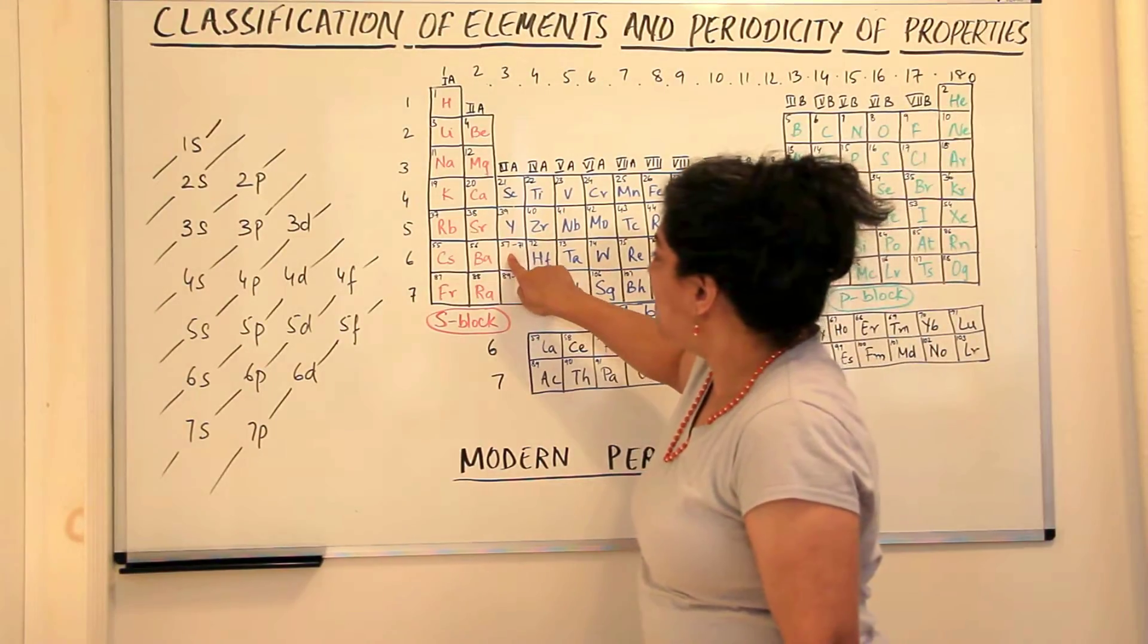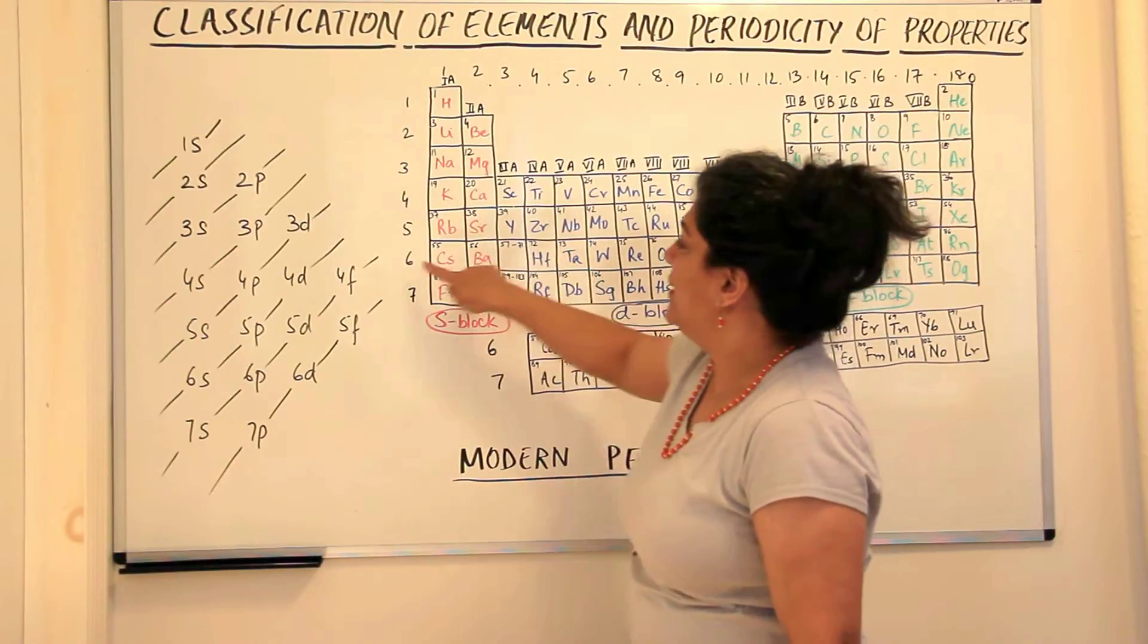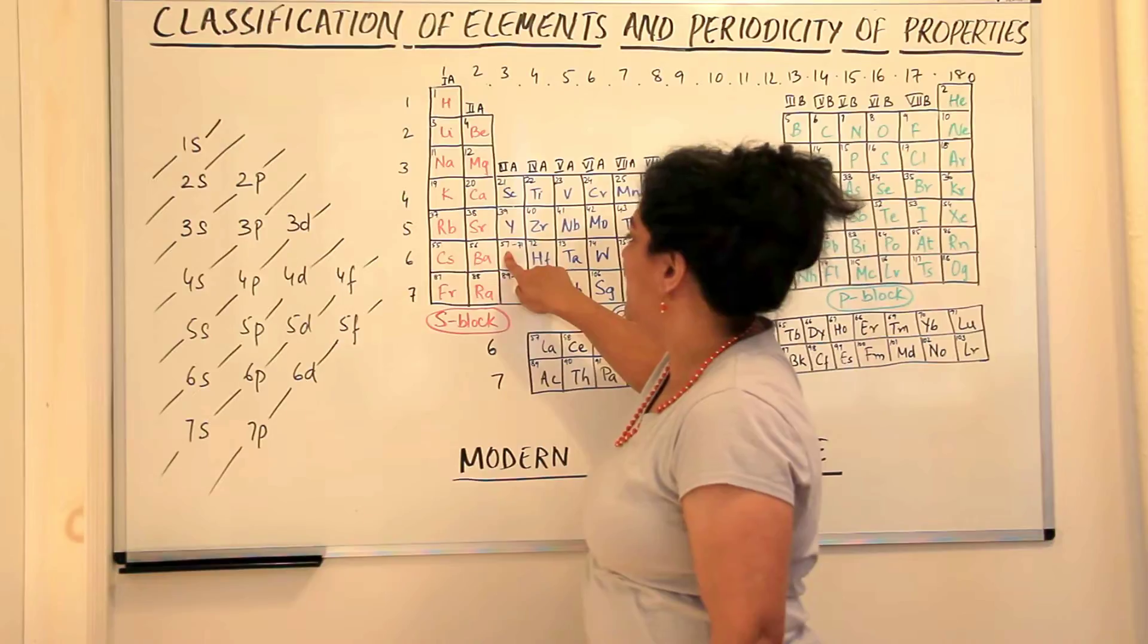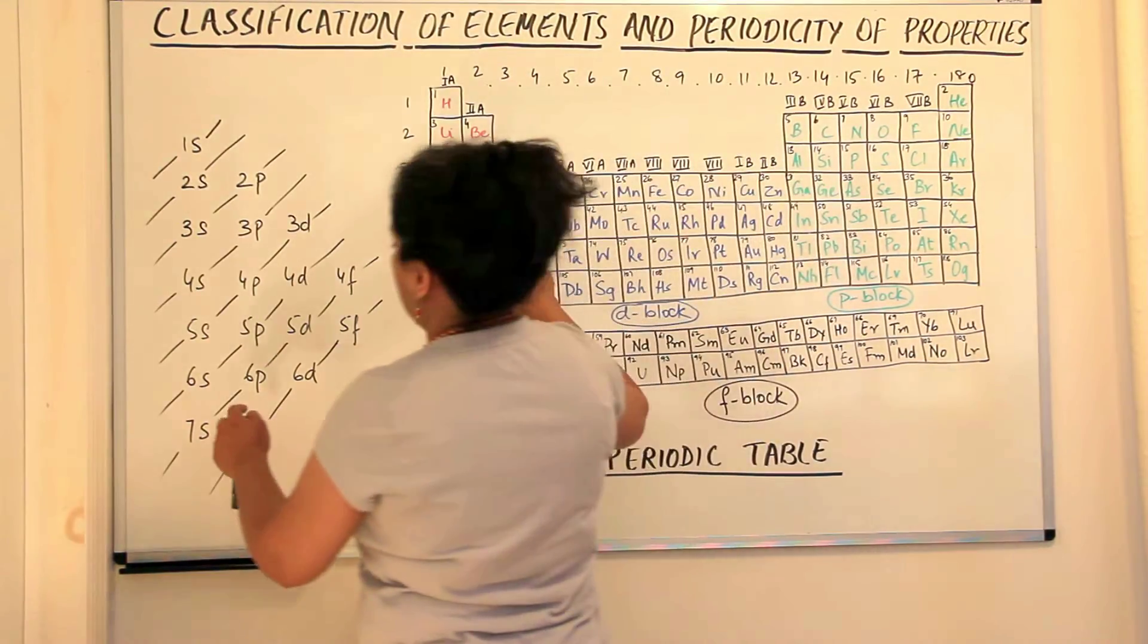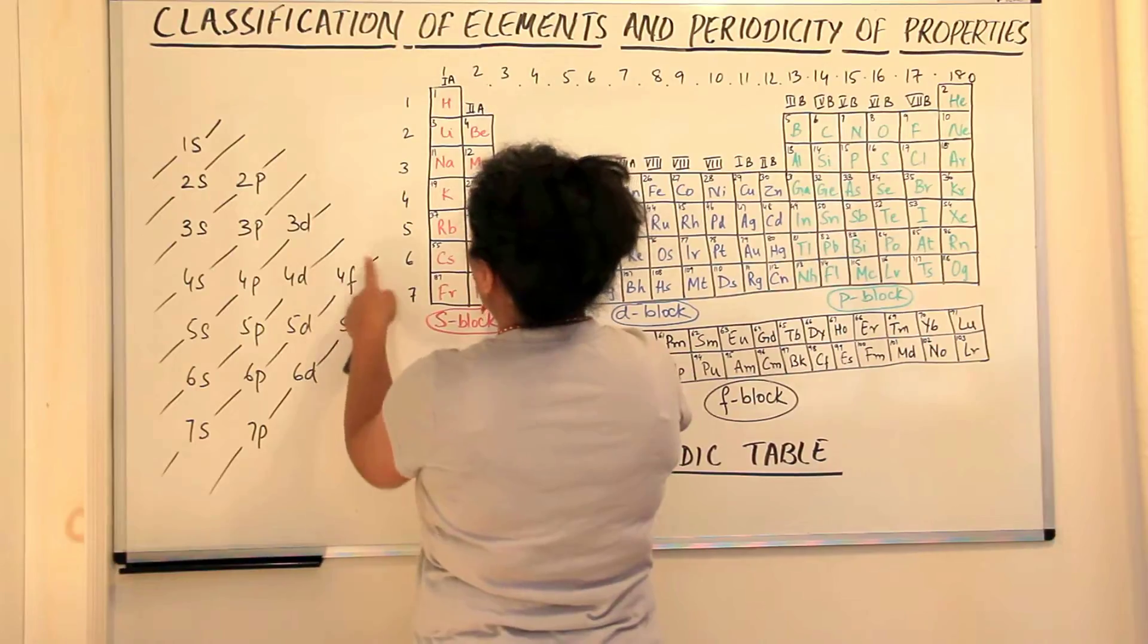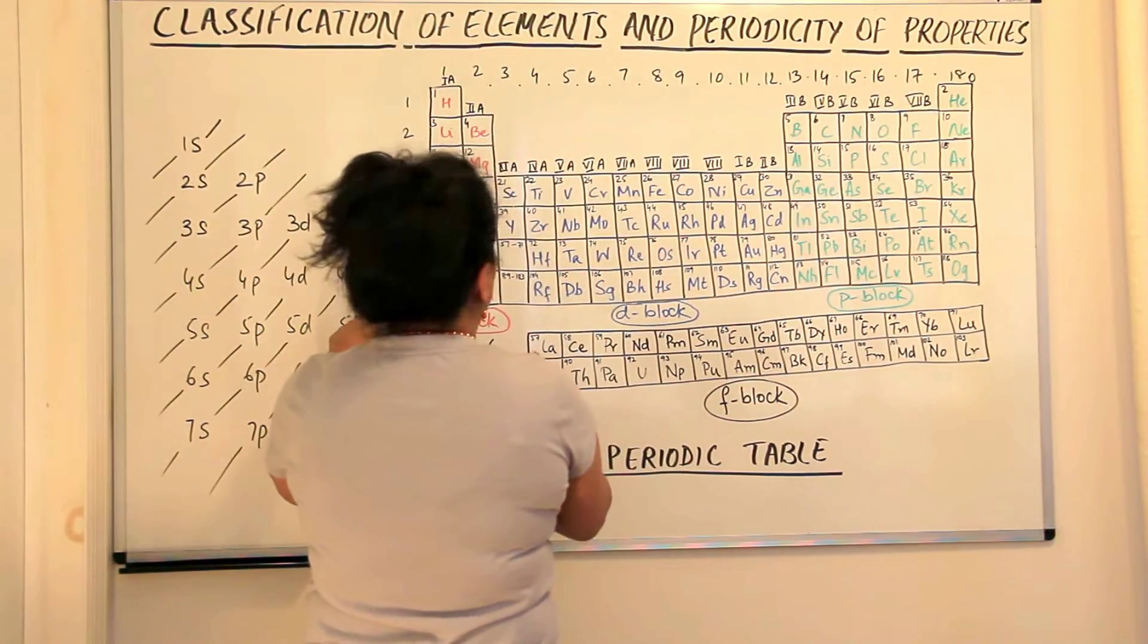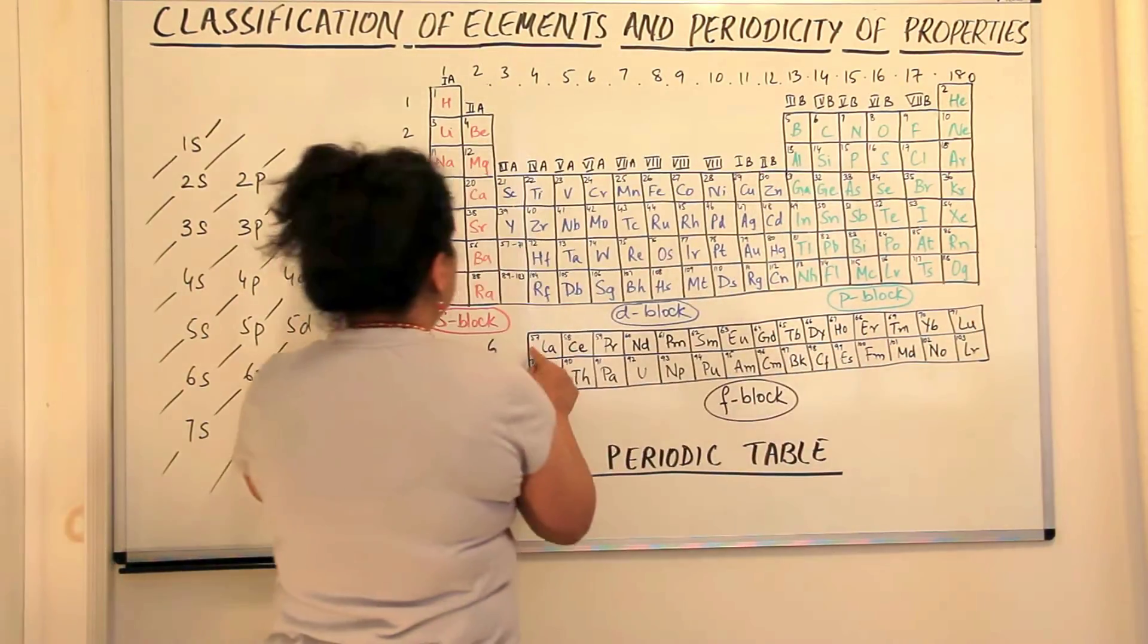And the element here which should have belonged to the third group, that is, after cesium barium, the element having atomic number 57 should belong to the third group and it should have one electron. After that, these electrons should go to 4f. So these 14 elements start with lanthanum and end with lutetium.